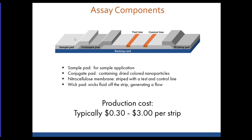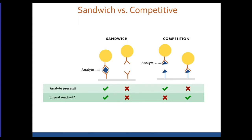A lateral flow strip is a pretty straightforward technology. You have a sample pad where you apply a sample; liquid from the sample flows along, dissolving colored nanoparticles from the conjugate pad. Those colored nanoparticles flow along the strip to the test line where, in the presence of the analyte, they give rise to a signal, and then they're wicked along into the wicking pad or sump. It's simple in conception but involves quite complicated chemistry. One appealing aspect is that these strips can be made for as little as 30 cents each at large scale.